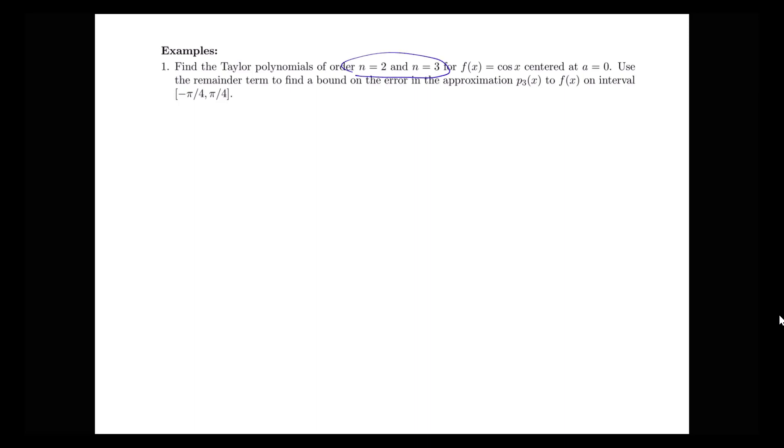First, we're being asked to find these Taylor polynomials of order 2 and 3. So I know I'm going to need the derivatives up to the third order. So I'm going to go ahead and start with a chart to help me organize the information to answer that question. And I'm looking at this centered at 0 here. So I'm going to need derivatives up to the third order.